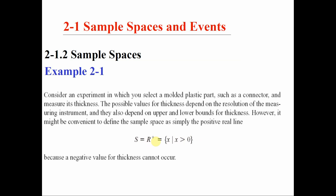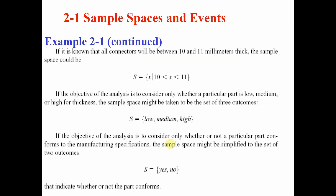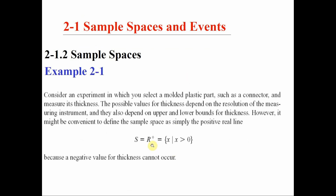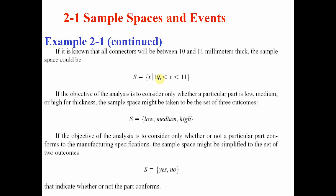Let's change the example. Imagine I know beforehand that all my wires have a thickness between 10 and 11 millimeters, and I ask you to measure the wire. What is the sample space? It is the set of all numbers x such that 10 ≤ x ≤ 11. The sample space is not all positive real numbers — because we know all thicknesses are between 10 and 11, the sample space is the set of all numbers between 10 and 11.